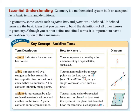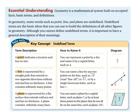A plane is represented by a flat surface that extends without end and has no thickness. A plane contains infinitely many lines and infinitely many points, but it's all a flat surface — think of a tabletop, a wall, or the ceiling of your room. You name a plane by either a capital letter such as P, or by at least three points on the plane that don't all lie on the same line, because if they're all on the same line, that doesn't uniquely describe a particular plane.